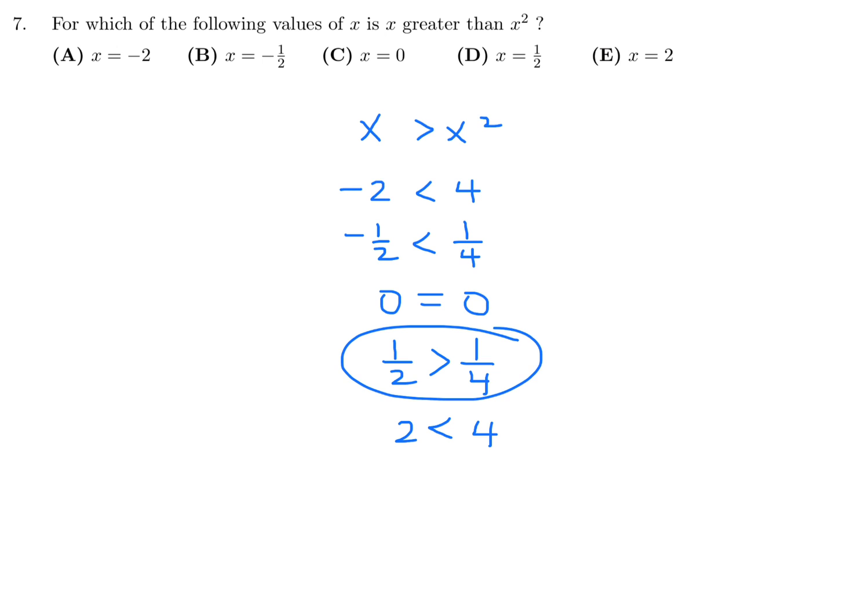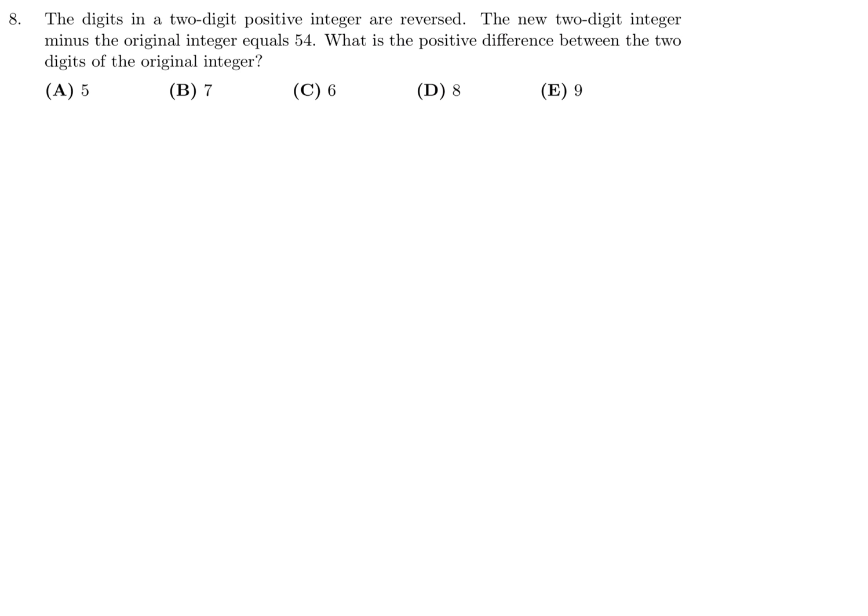The digits in a two-digit positive integer are reversed. The new two-digit integer minus the original integer equals 54. What is the positive difference between the two digits of the original integer? I'll let the first integer be ab, the second integer is ba. They're saying that ba minus ab equals 54. For example, if you had 73, it's 7 times 10 plus 3. So this would be 10b plus a, and this would be 10a plus b. Taking it out of the bracket: 10b minus b is 9b, a minus 10a is minus 9a, and that's 54.